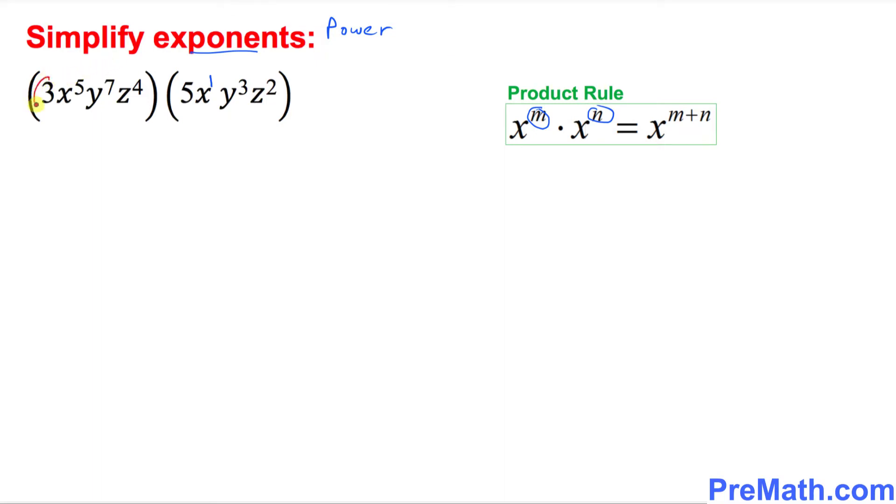Look at these, 3 and 5, they are just simply the coefficients. They just get multiplied as usual. 3 times 5 is 15. Just simple multiplication. Now over here, look at this: x power 5 and x power 1, when you multiply them you add their exponents. So this is going to become 5 plus 1.